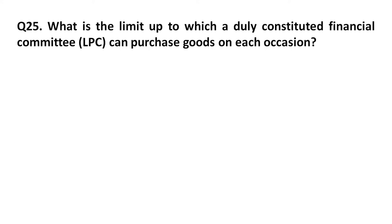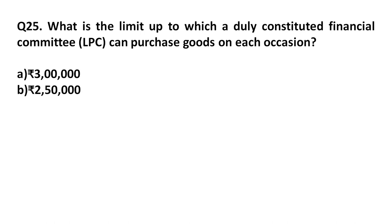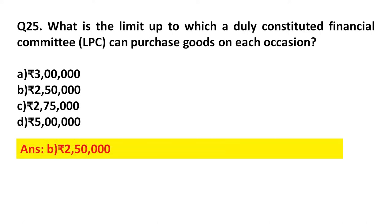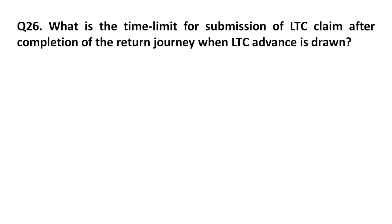Question 25: What is the limit up to which a duly constituted Local Purchase Committee (LPC) can purchase goods on its own occasion? Option A: Three lakhs. Option B: Two lakh fifty thousand. Option C: Two lakh seventy-five thousand. Option D: Five lakhs. Answer: Option B, two lakh fifty thousand.